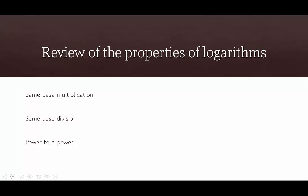Before we get started on simplifying, let's review the three properties of logarithms. First we have same base multiplication. If we have log base b of m plus log base b of n, that's the same thing as just one single logarithm where the argument is m times n. We combine the two into one logarithm with the same base and multiply the arguments.